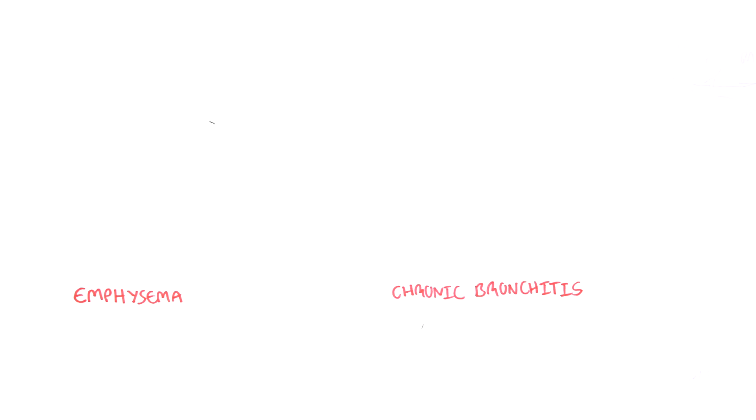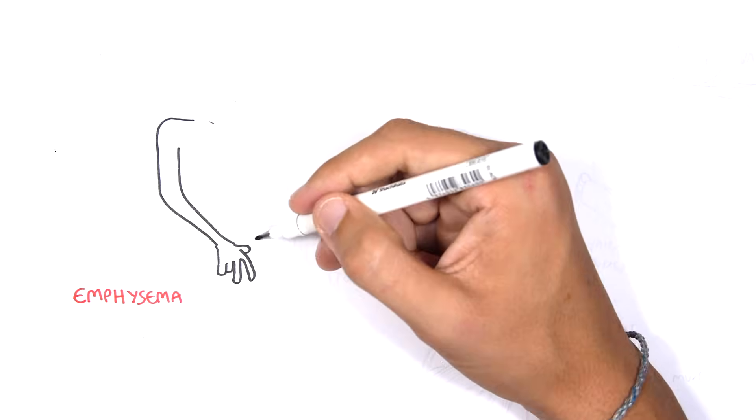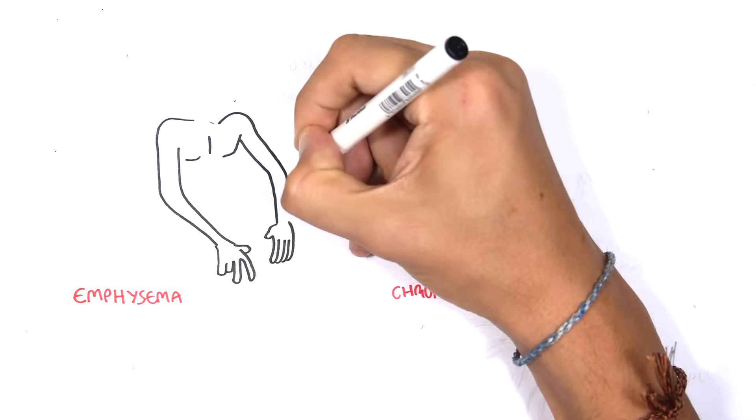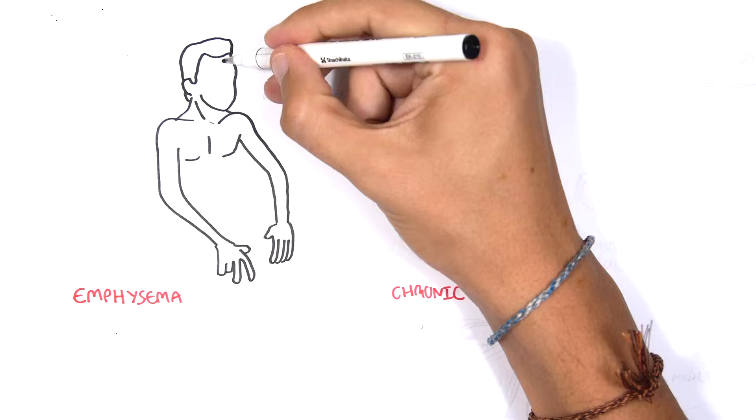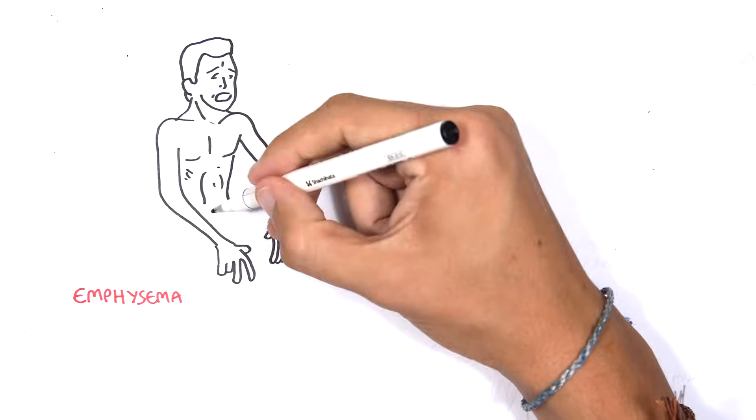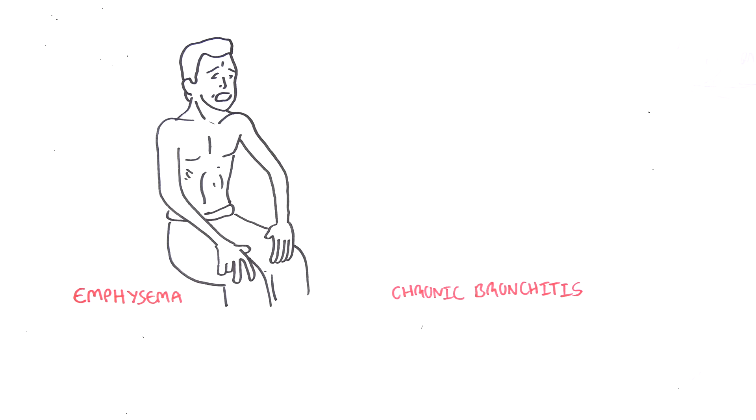COPD encompasses a number of diseases, including emphysema, chronic bronchitis, and chronic asthma. In this video we will mainly focus on and compare chronic bronchitis and emphysema.